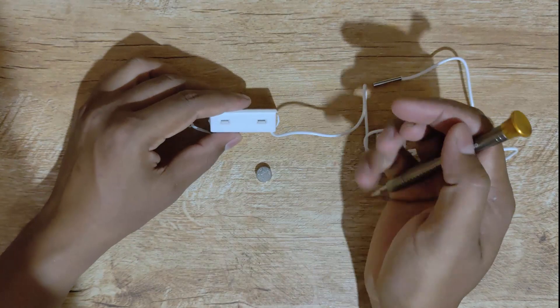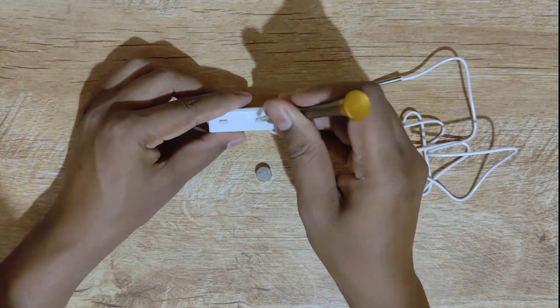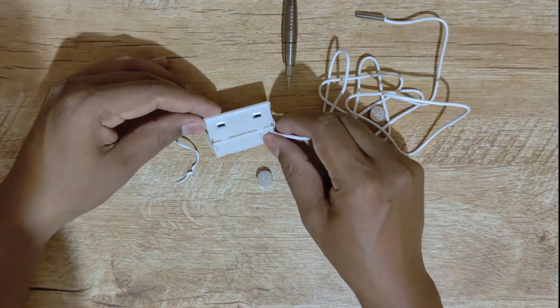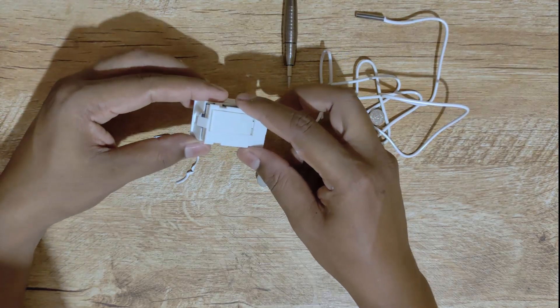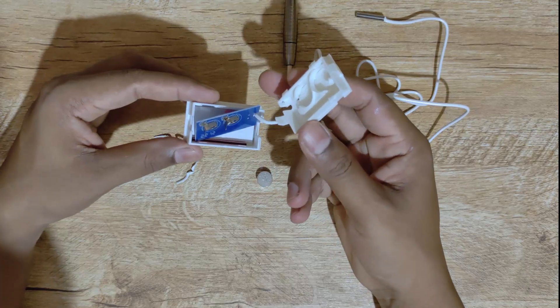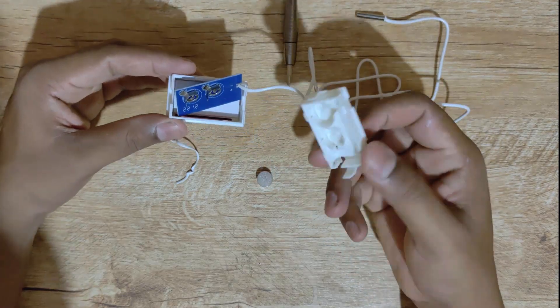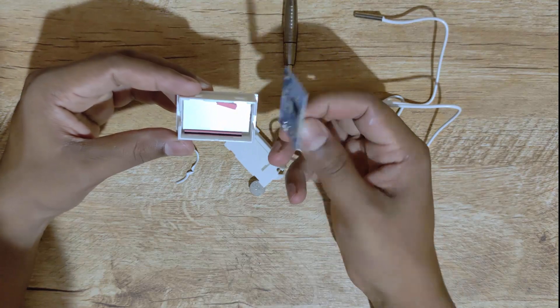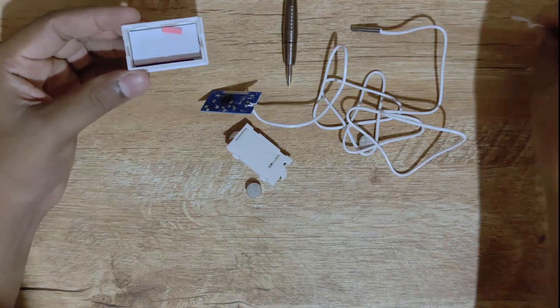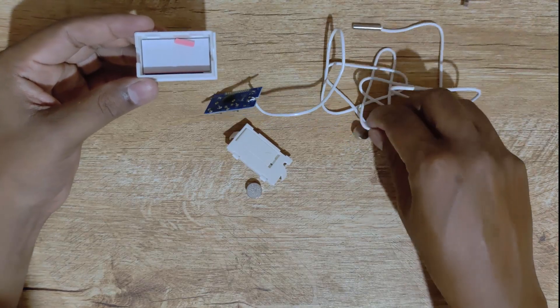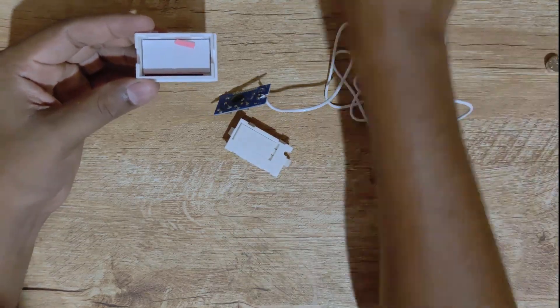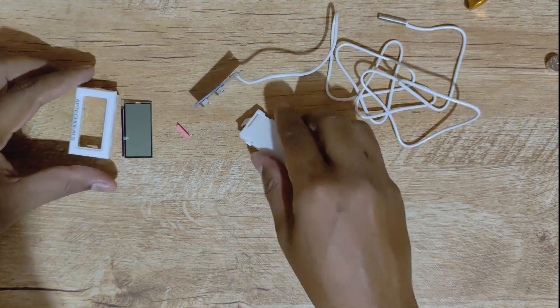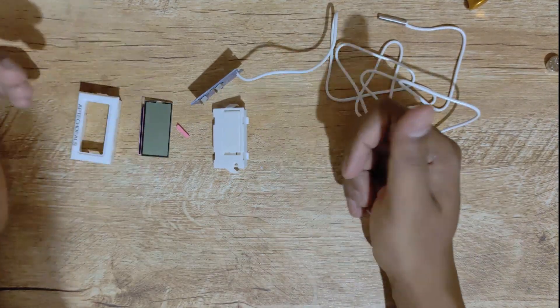I guess we have opened all the four snaps. Now let's see what is inside. Nothing much, we have the bottom cover, they have given one PCB. So these are the main constituent parts for this digital thermometer.